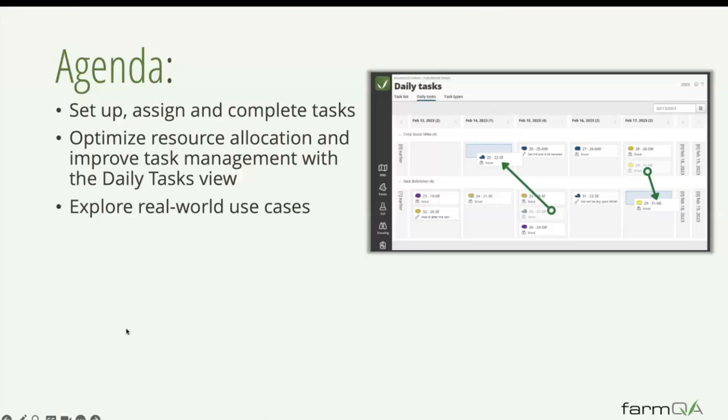The agenda is we're going to walk through how you can set up tasks in FarmQA, assign them to individuals, and then those individuals can complete those tasks. The value in that is in dispatching a team, being efficient and making sure you don't miss known tasks or things that need to get done, and also the paper trail. So you can track to say, if something gets missed, where in that loop or process did things fall through the cracks.